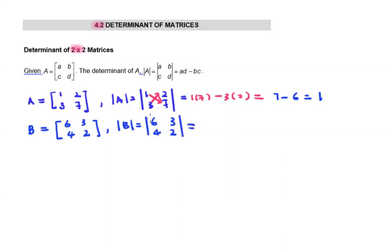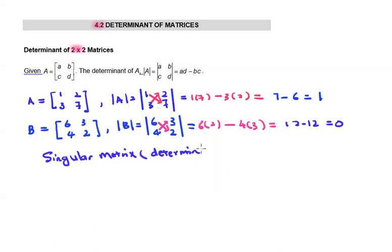So we use 6 times 2 minus 4 times 3. This equals to 12 minus 12 which is equal to 0. When the determinant is equal to 0, the matrix is called a singular matrix. Singular matrix where the determinant of the matrix is equal to 0.